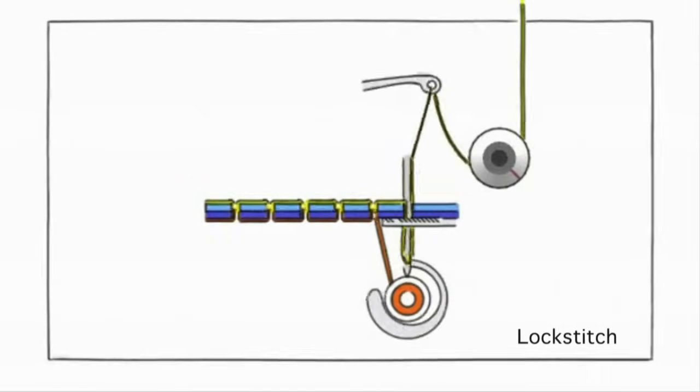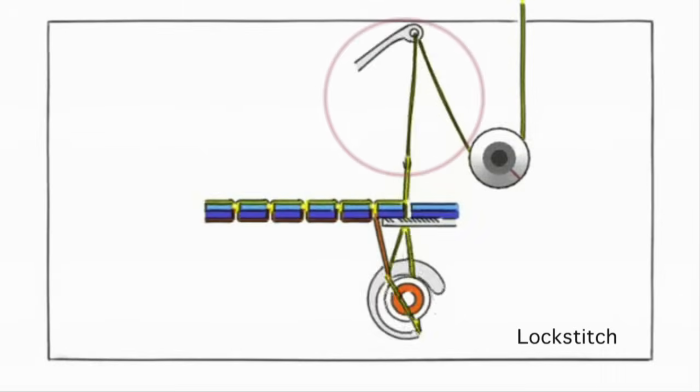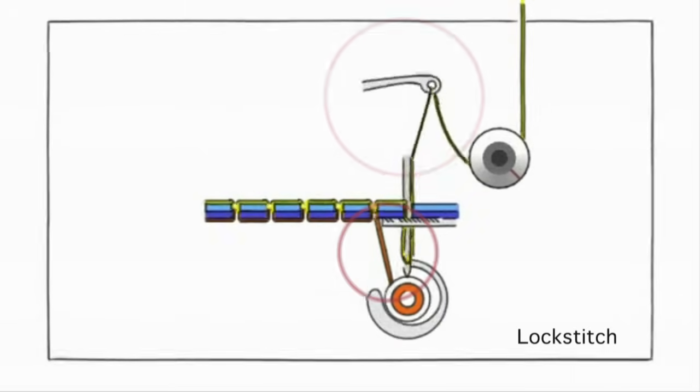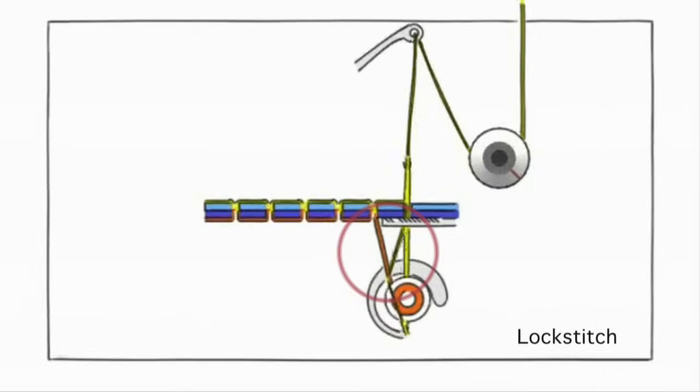When that loop goes around the bobbin thread, the take-up lever moves up as the needle is coming up and it tightens the bobbin thread up underneath the fabric.